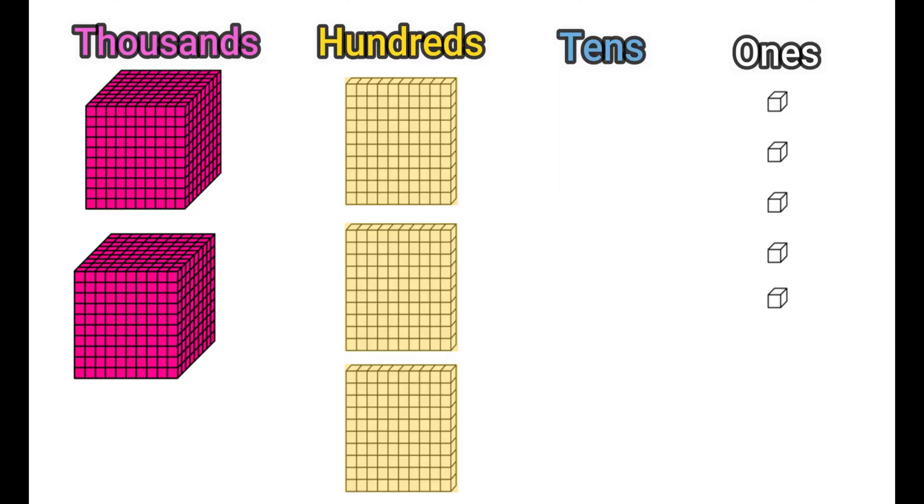And now your final question. What is the number shown by the place value blocks? If you said 2,305, you were correct. Great job.